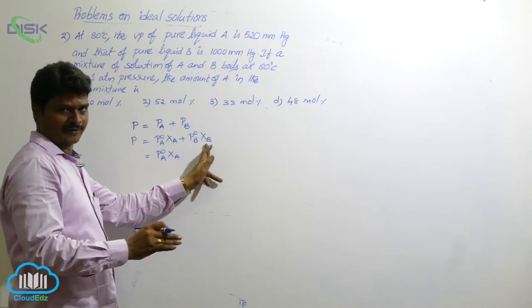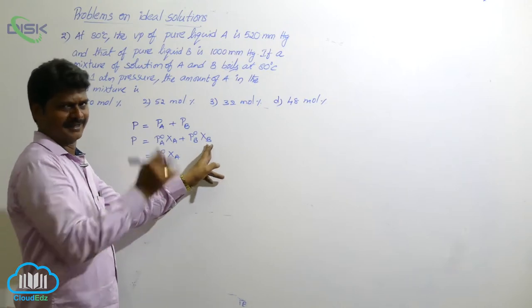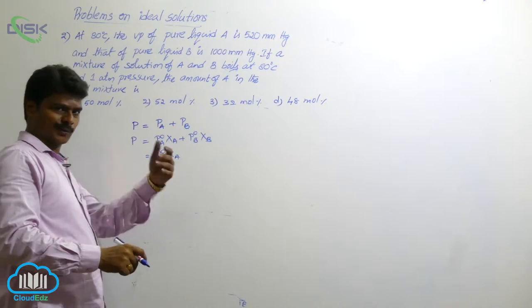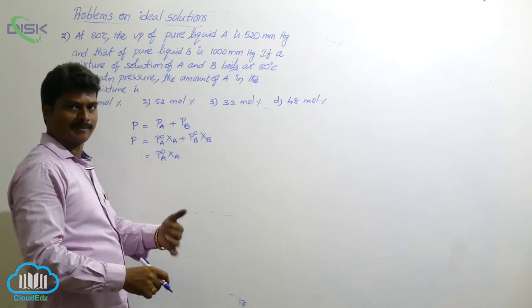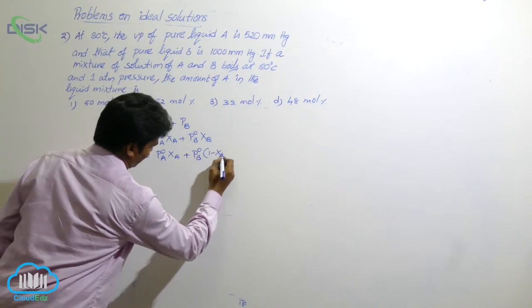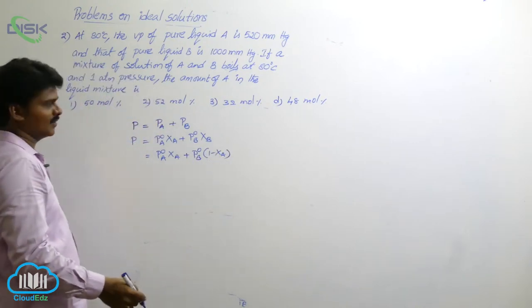If I want to substitute xB in terms of xA, how to? Sum of mole fractions is equal to 1. In any mixture, sum of mole fractions is equal to 1. That's why xA plus xB is equal to 1. Then xB is equal to 1 minus xA. So, p0B into 1 minus xA.